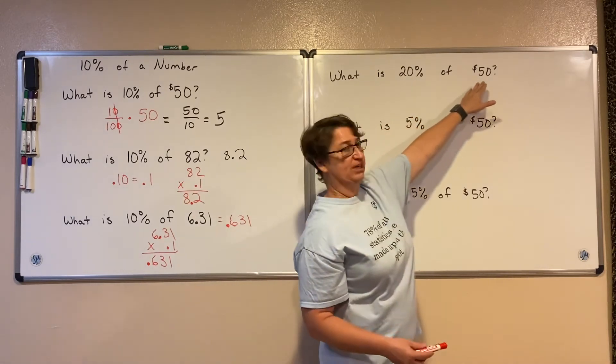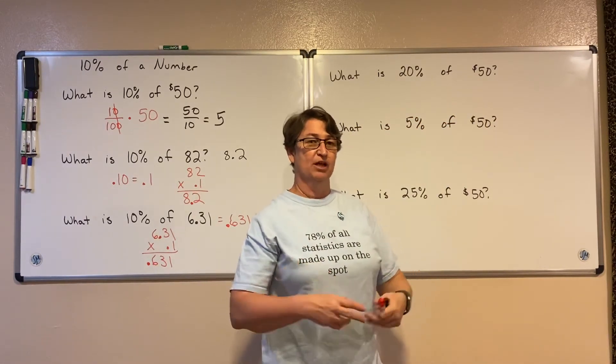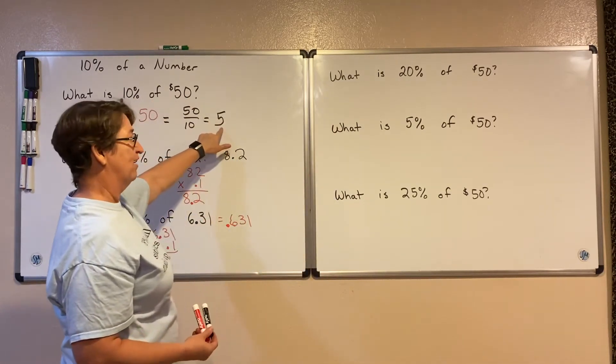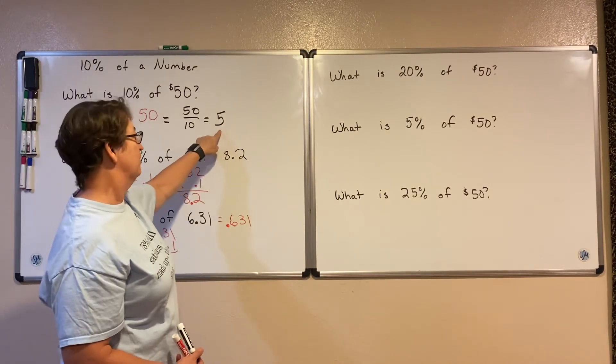what is 20% of $50? Well, we're just going to take our 10% and double it. So once we have 10% of a number, in this case $5, to find 20%, I just take that and double it.